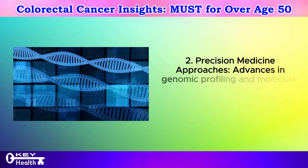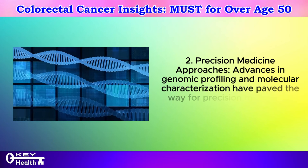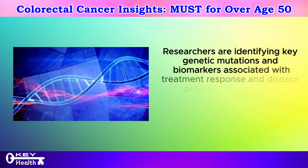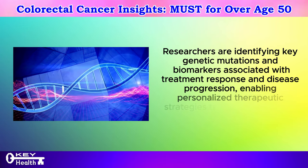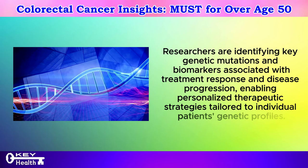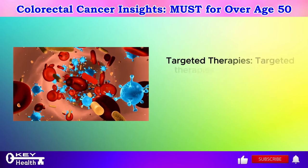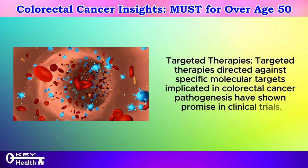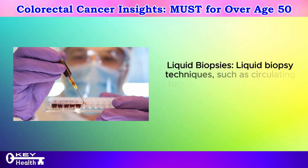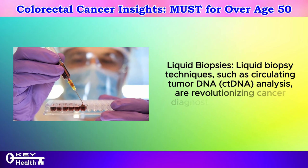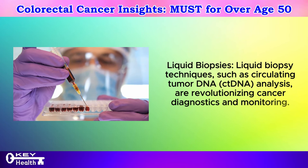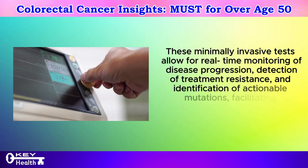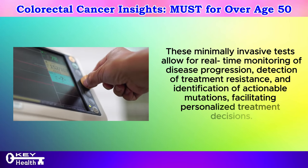Recent advancement 2: Precision medicine approaches. Advances in genomic profiling and molecular characterization have paved the way for precision medicine in colorectal cancer. Researchers are identifying key genetic mutations and biomarkers associated with treatment response and disease progression, enabling personalized therapeutic strategies tailored to individual patients' genetic profiles. Recent advancement 3: Targeted therapies directed against specific molecular targets implicated in colorectal cancer pathogenesis have shown promise in clinical trials. Recent advancement 4: Liquid biopsy techniques — such as circulating tumor DNA (ctDNA) analysis — are revolutionizing cancer diagnostics and monitoring, allowing for real-time monitoring of disease progression, detection of treatment resistance, and identification of actionable mutations, facilitating personalized treatment decisions.